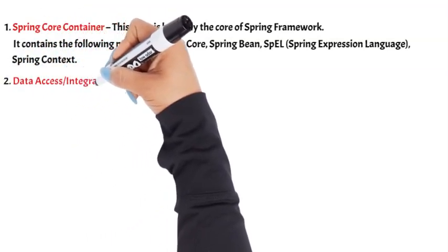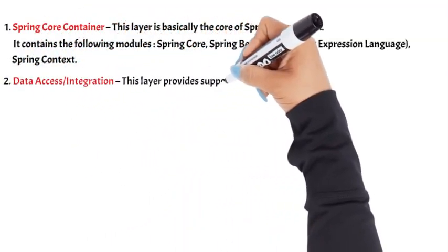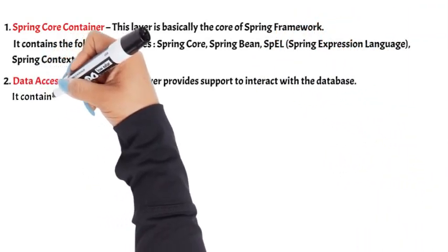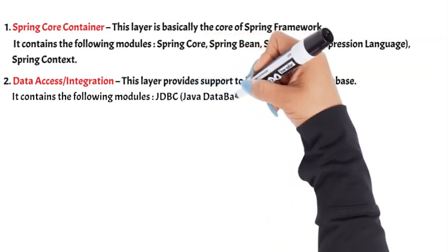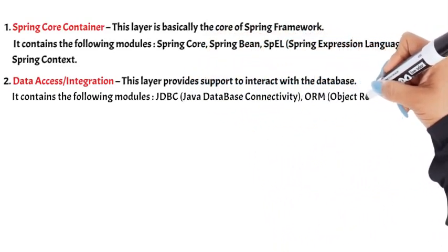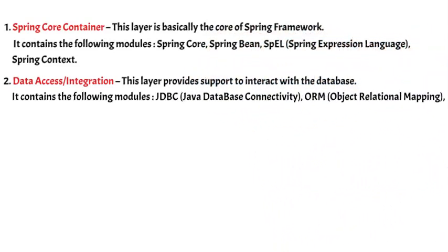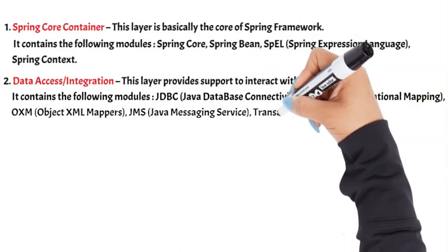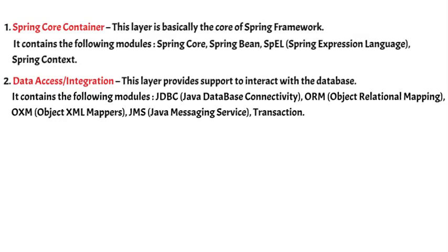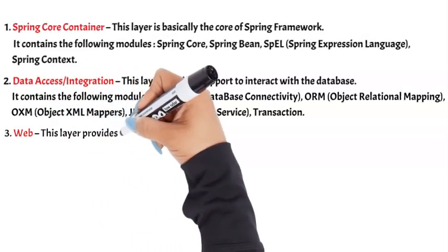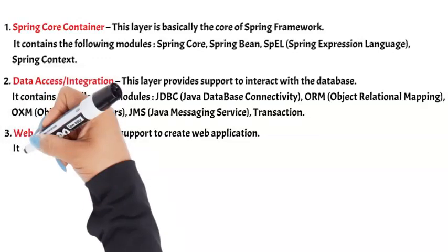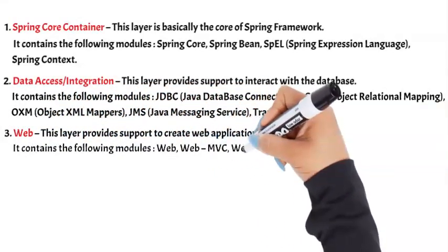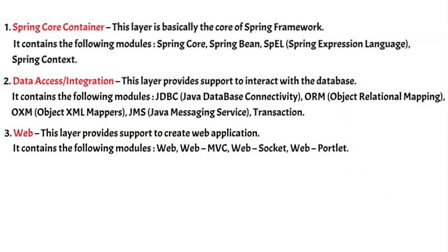2. Data Access/Integration: This layer provides support to interact with the database. It contains the following modules: JDBC (Java Database Connectivity), ORM (Object Relational Mapping), OXM (Object XML Mappers), JMS (Java Messaging Service), and Transaction. 3. Web: This layer provides support to create web applications. It contains the following modules: Web, Web MVC, Web Socket, and Web Portlet.